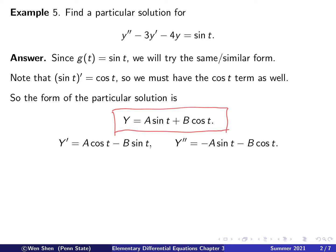The form we have decided is a combination of sine and cosine having the same argument as the g term: A sine t plus B cosine t, where capital A and B are the coefficients to be determined. We will plug this back in, so we need the derivatives. The first derivative: sine derivative is cosine, cosine derivative is negative sine. Then we write out the second derivative: cosine derivative is negative sine, and sine derivative is cosine.